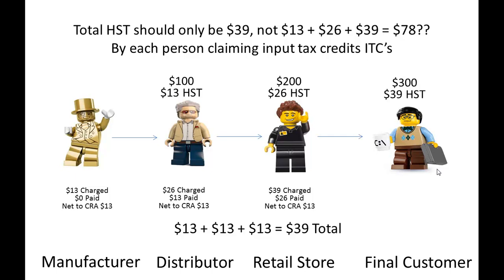So then you've got $13 plus $13 plus $13, which is the total $39. That's how HST avoids the whole double counting. So in your business, when you're charging your customers, you're collecting that money, then you're going to send in less whatever you spent in HST when you bought things like office supplies, newspapers, or goods like computers that you're reselling — anything that you're paying HST on — so that there's not a double or triple counting of HST.